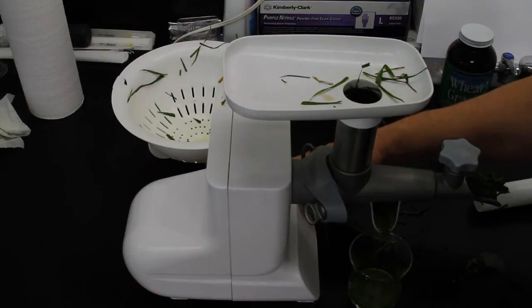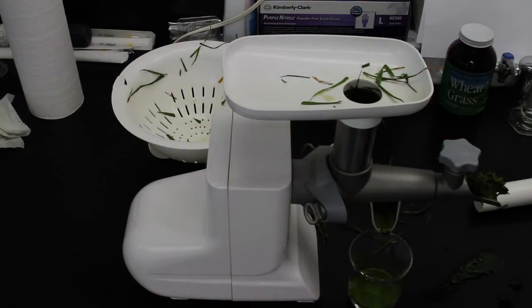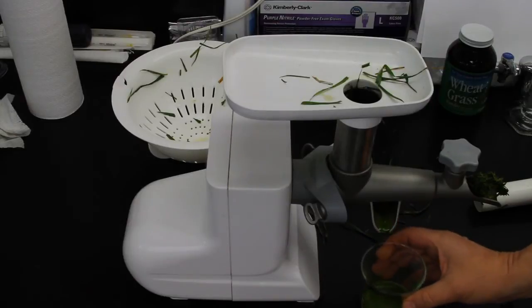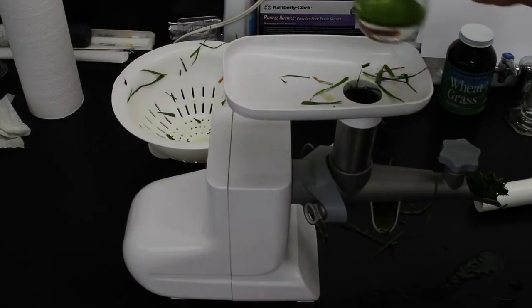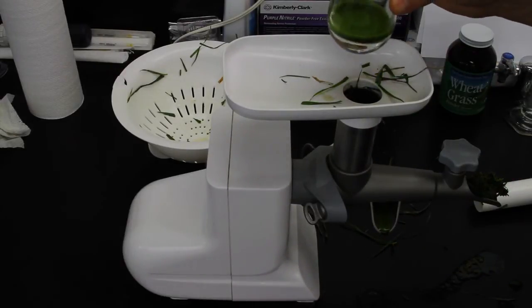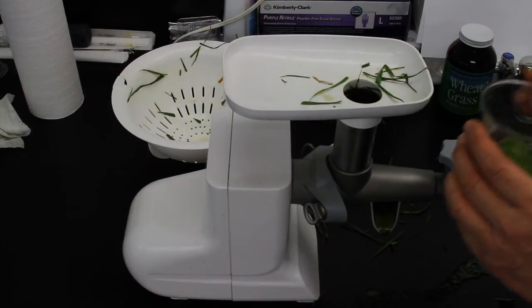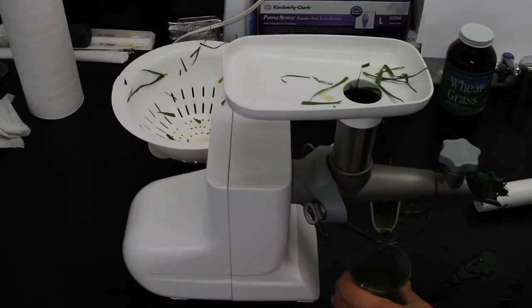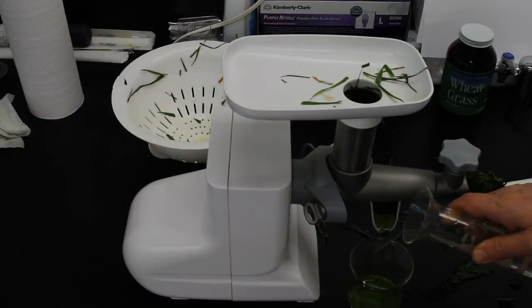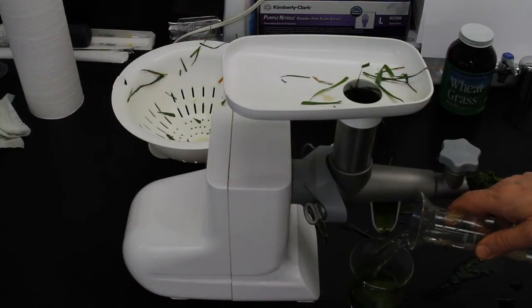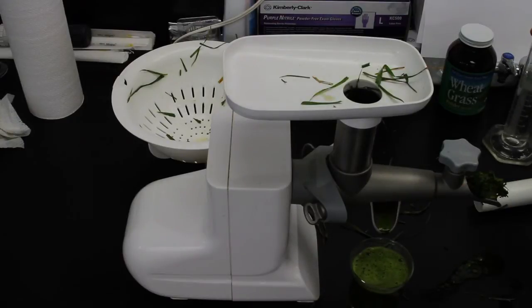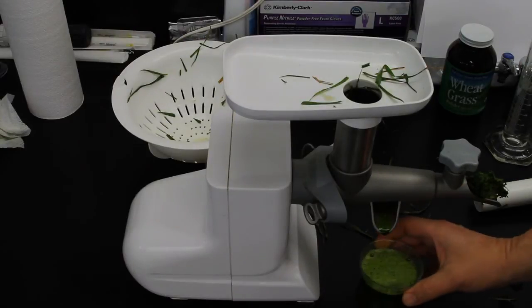Now there's about a tablespoon of wheatgrass juice in there. Very, you can see it's just barely covering the bottom of that glass. But watch what happens when I add filtered water to it. Look at that, it's still as dark a green as it was before.